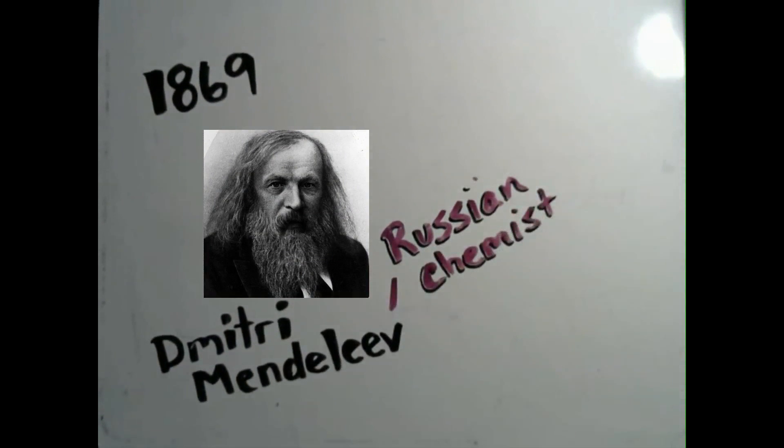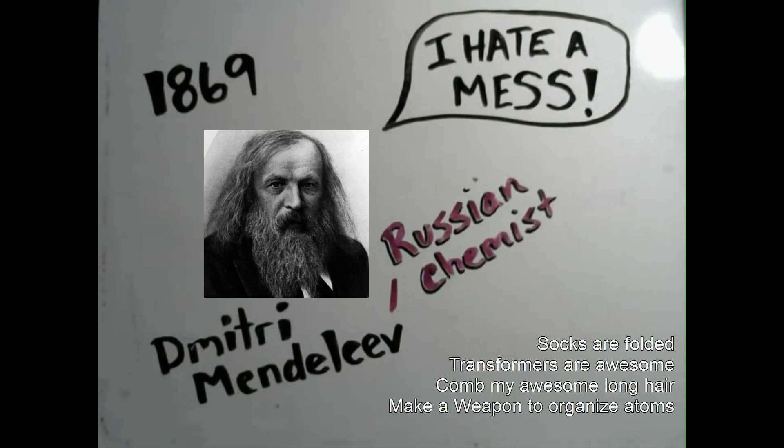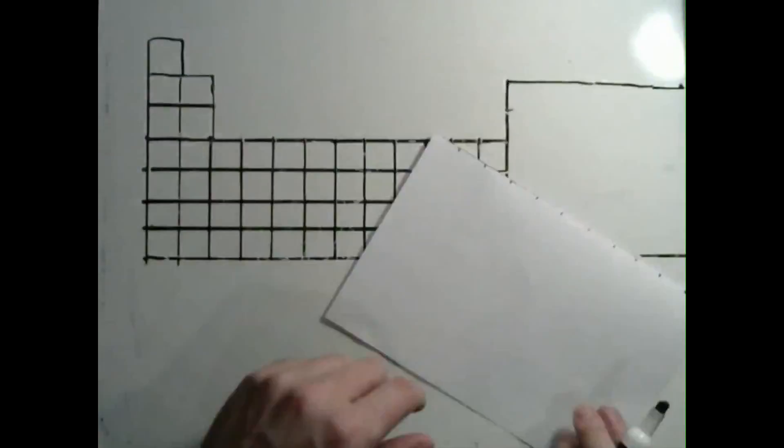And thus we come to Dmitry Mendeleev. He was big into organization, always folding his socks and putting away his transformers. So in 1869, good old Dmitry introduced his epic weapon against chemical mess.